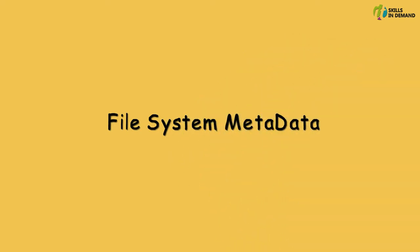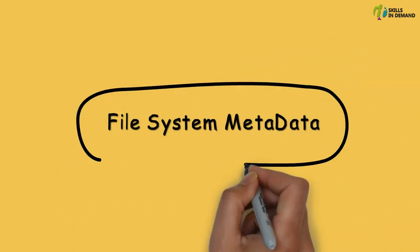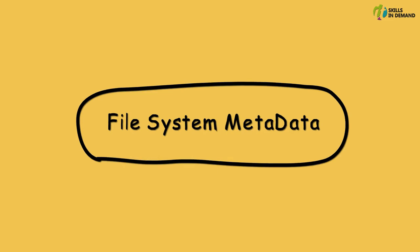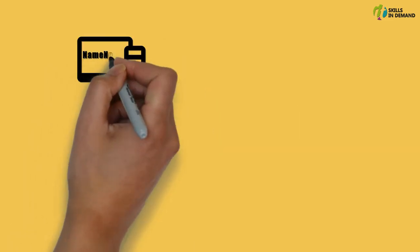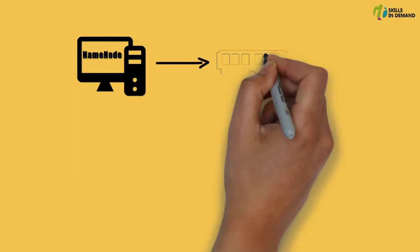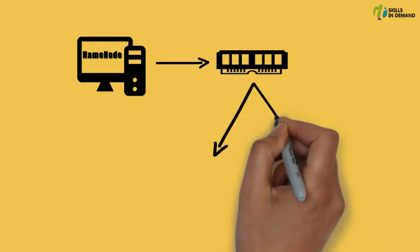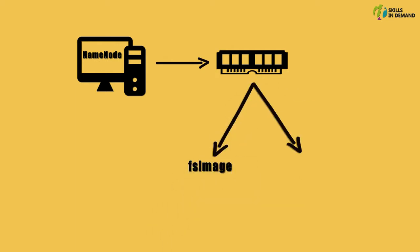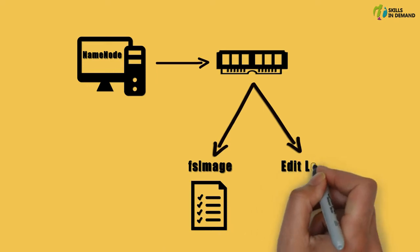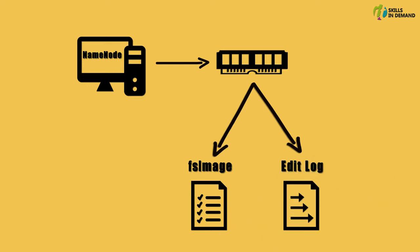In this session, let us try to understand how the file system metadata is managed by Hadoop. Apart from storing the file system metadata on the RAM, the name node also stores this information on a set of files. The two important files among them are the fsimage file and the edit log file. The fsimage stores the complete snapshot of the file system metadata, whereas the edit log contains all the incremental modifications done to this metadata.